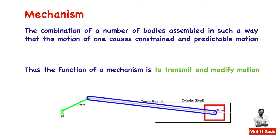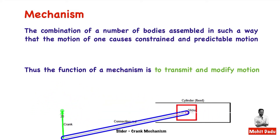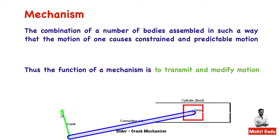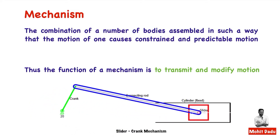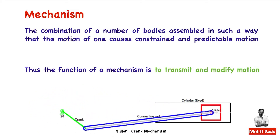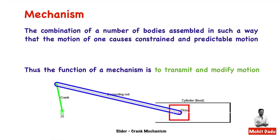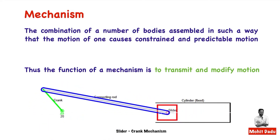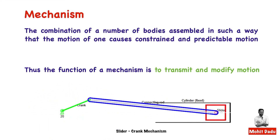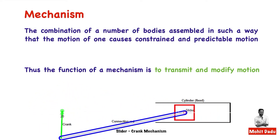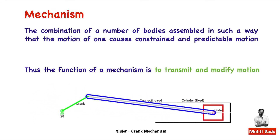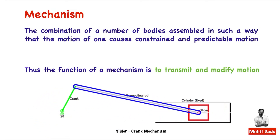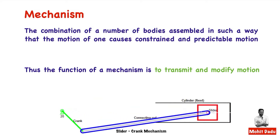Here you can see a mechanism known as the slider-crank mechanism, where a crank undergoes rotational motion and that rotational motion is converted into reciprocating motion of the slider. There is a modification of motion from rotation to translation, and that motion is transmitted through a link called the connecting rod.